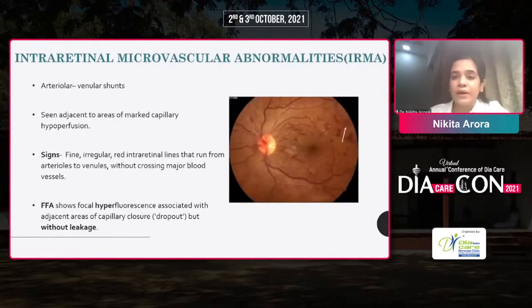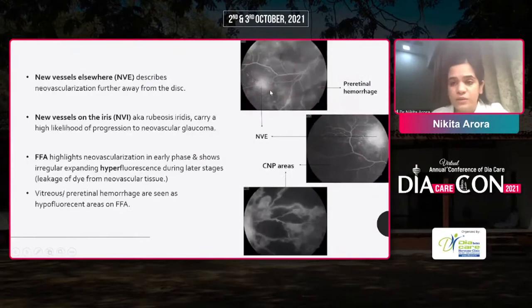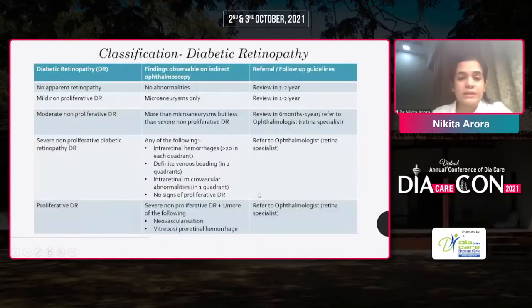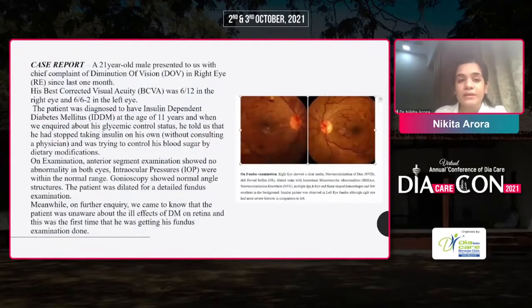Intra-retinal microvascular abnormalities are essentially arteriovenous shunts, which can be seen aggregated in certain areas. In proliferative retinopathy, there is proliferation of new vessels, which can be at the disc or elsewhere. These new vessels typically develop at the junction of perfused and non-perfused retina. Diabetic retinopathy can be classified into no apparent retinopathy, non-proliferative retinopathy, moderate NPDR, severe NPDR, and proliferative diabetic retinopathy.